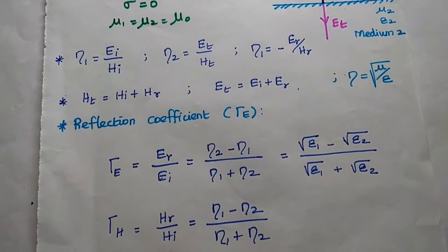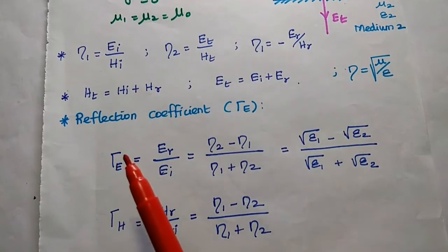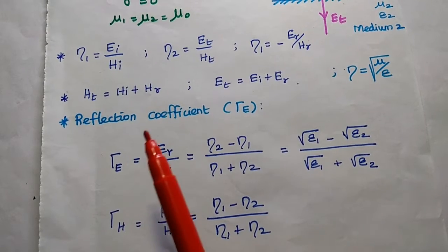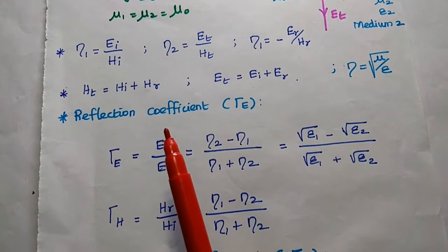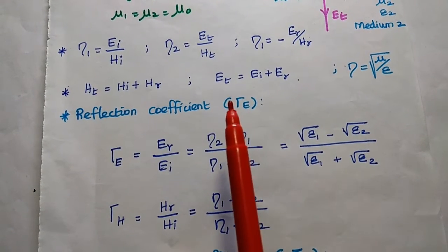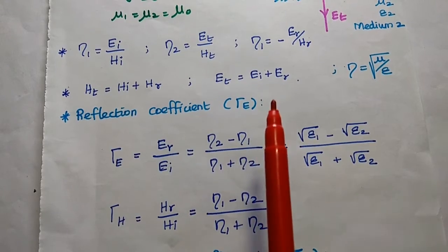The total transmitted magnetic field is the sum of incident and reflected fields. Similarly, Et is equal to Ei plus Er.